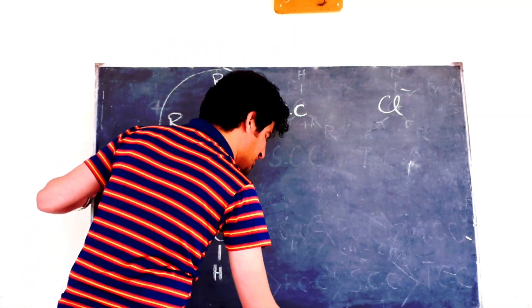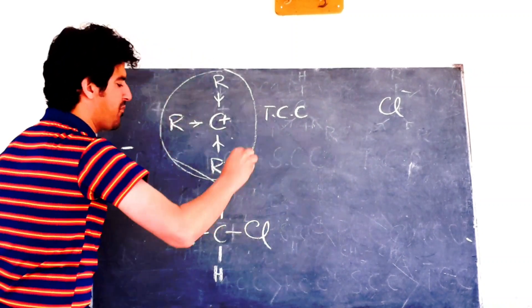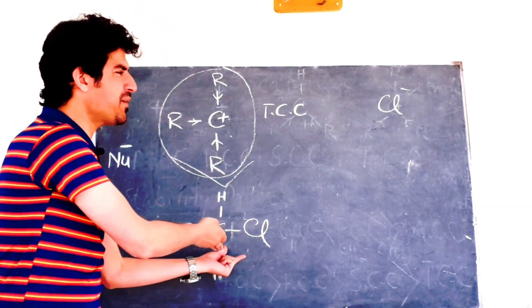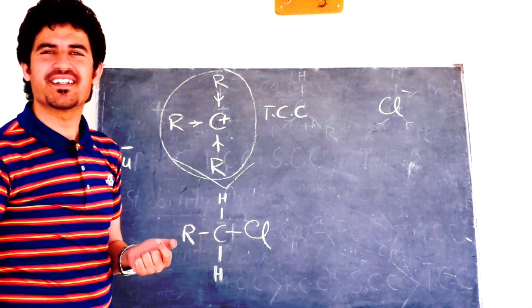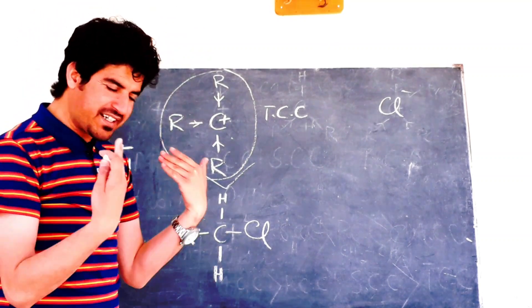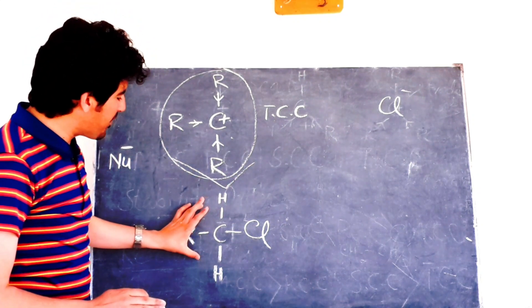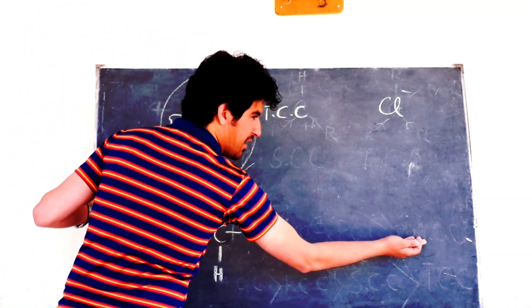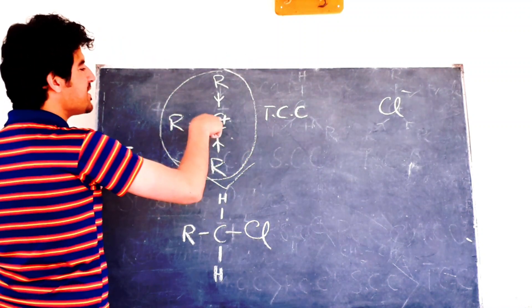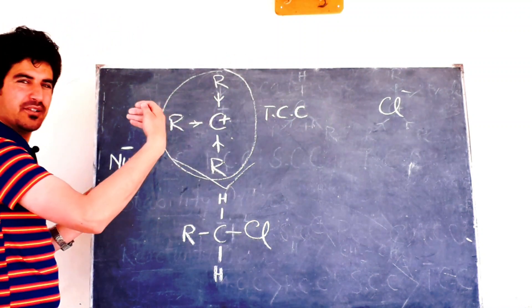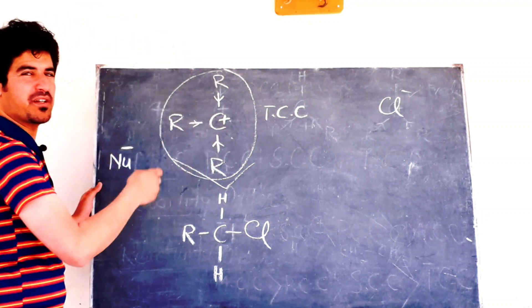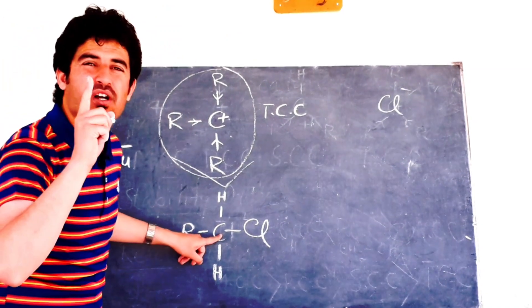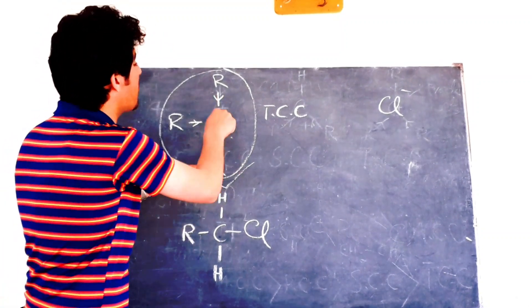In the primary alkyl halide, there is only one stabilizing group. Because the primary carbocation is unstable, it will re-attach with the chloride and reform the reactant. The tertiary carbocation, being stable, says 'I can stay without you.' But the primary carbocation cannot stay without the chloride — it reforms the original compound.